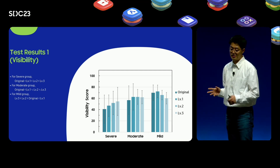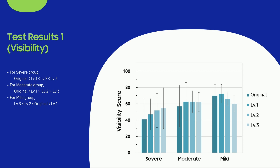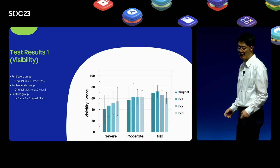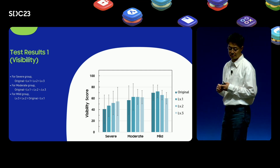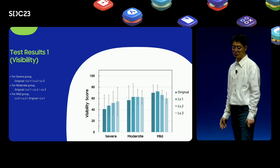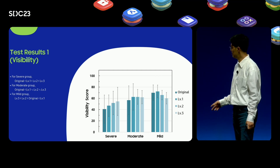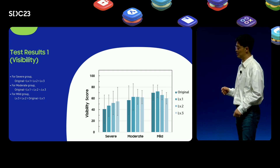This graph shows the visibility score for each video enhancement level. As shown in the graph, there was a significant difference in visibility scores depending on the degree of visual impairment. In the severe and moderate visual impairment group, visibility scores of all enhancement levels were higher than the original input. In particular, the severe visual impairment group had the highest visibility score at level 3, which is the strongest level of enhancement. In the mild visual impairment group, only level 1 showed a higher visibility score than the original input.